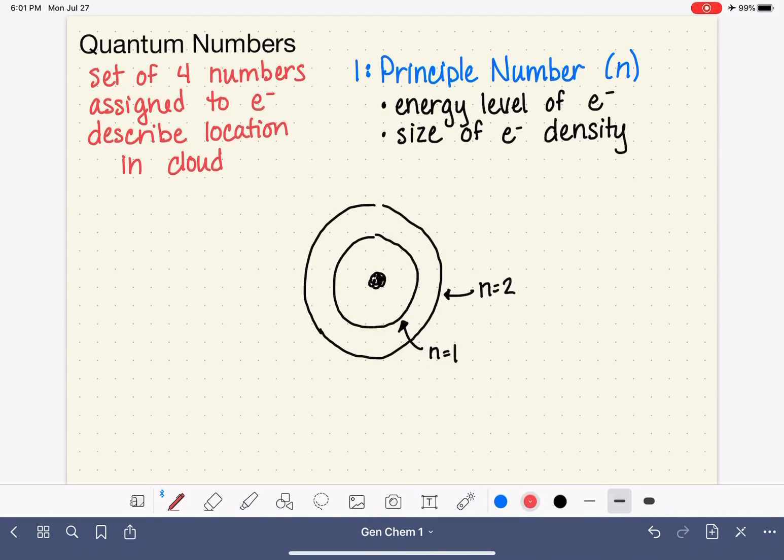So for the principal quantum number n, the possible values of n for any given electron start at n equals 1. And they continue up incrementally, as we've seen, going all the way, theoretically, to infinity.